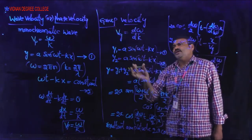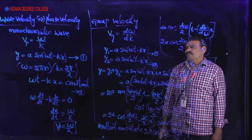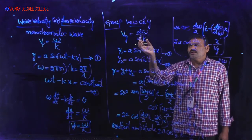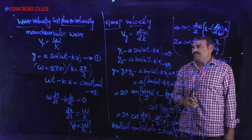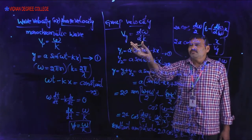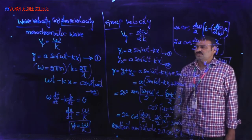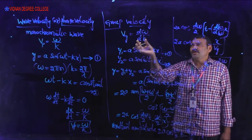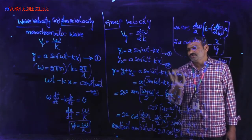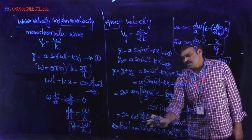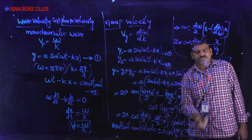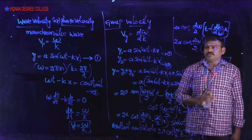Group velocity means: considering pulses rather than a monochromatic wave, the group which has maximum amplitude advances through the medium, and its velocity is known as group velocity. In other words, group velocity is the velocity with which the energy in the group is transmitted. By comparing the resultant wave equation with the general wave equation, we obtained the expression for group velocity.